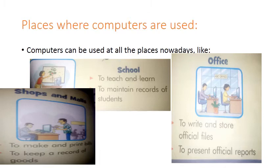Next is shops and malls. आप लोग दुकान पे जाते हो सामान खरीदने, malls में घूमने जाते हो. जब आप सामान खरीद लेते हो उसके बाद bill देना होता है — वहाँ पे computer पे bill बना के देते हैं आपको. That is to make and print bills. Computer में bill बनाते हैं, printer से print करते हैं, and to keep a record of goods — computer में उनके सारे सामान का नाम और price record रहती है.